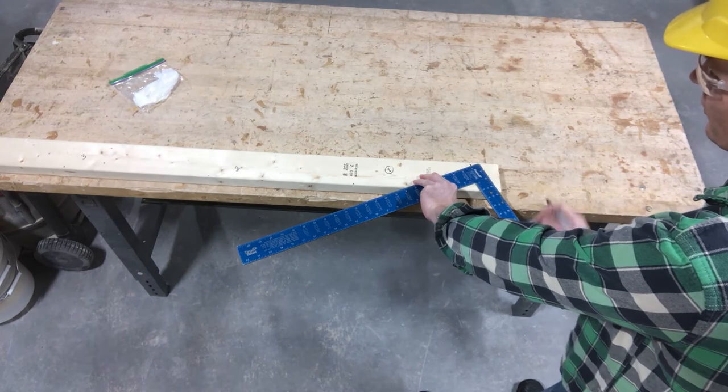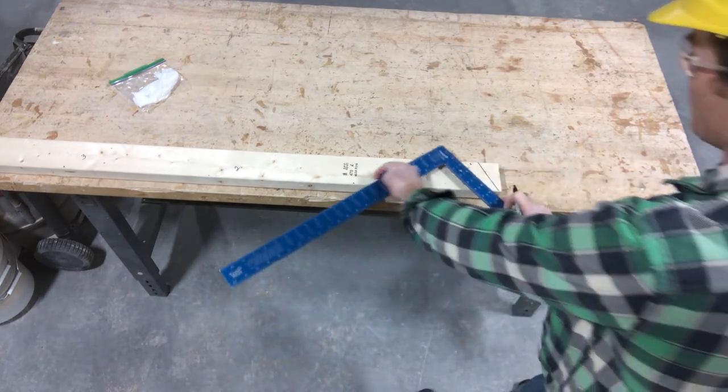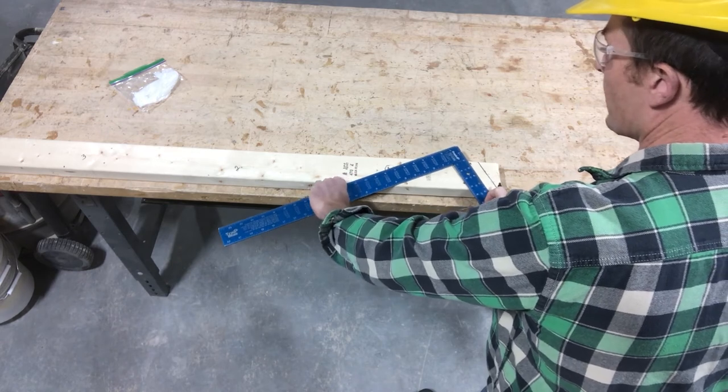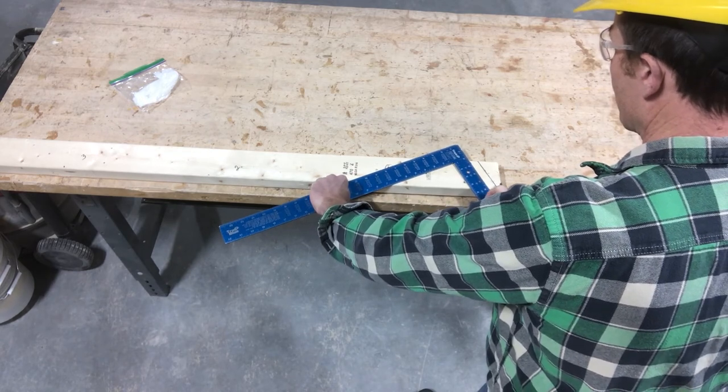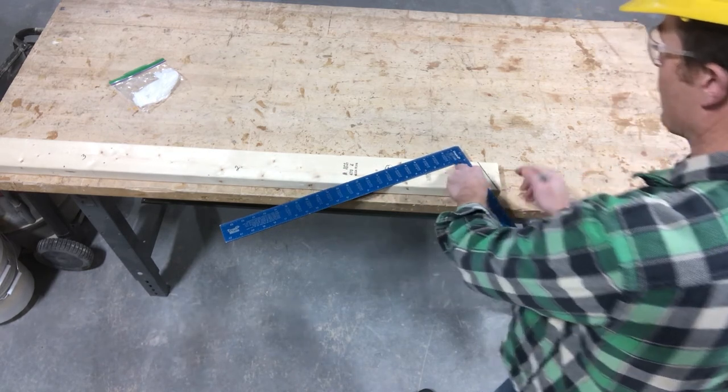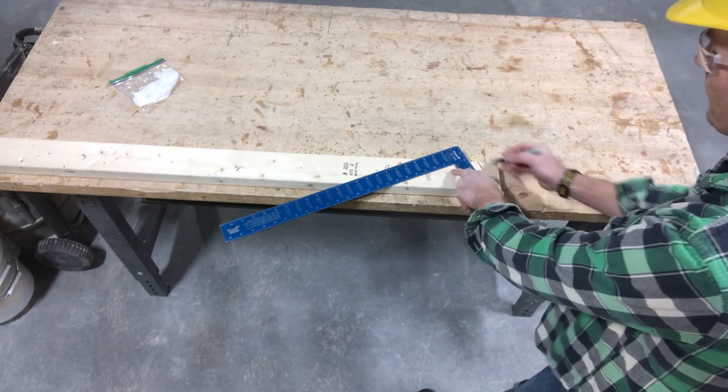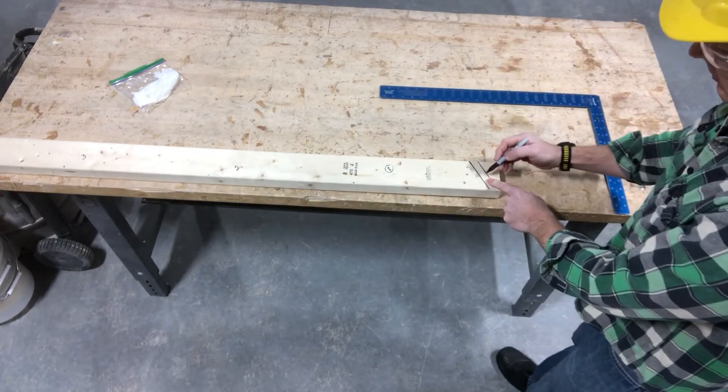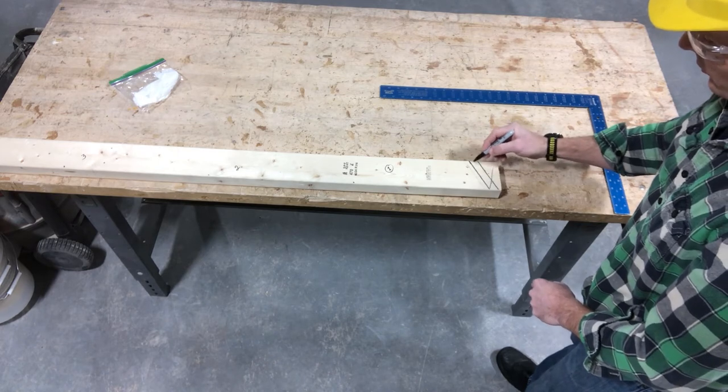So half of inch and a half is three quarters. So I'll put my little mark right there. And still on my 6-12 slope. Put it right there. That's my plumb cut.